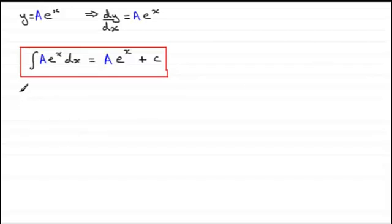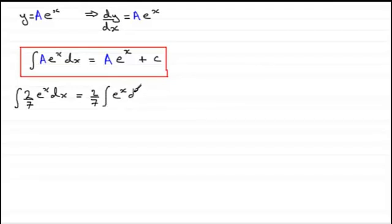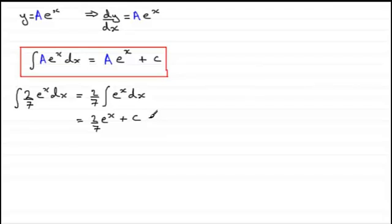Here's an example: integrate (2/7)e to the power x with respect to x. Our constant A is 2/7 — we bring it out in front of the integral. We still need to integrate e to the x with respect to x. So the answer is (2/7)e to the power x plus c. That's fairly straightforward.